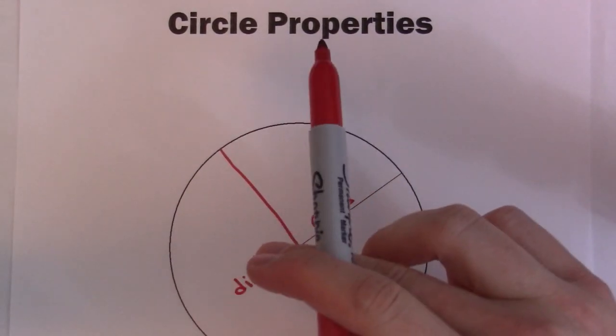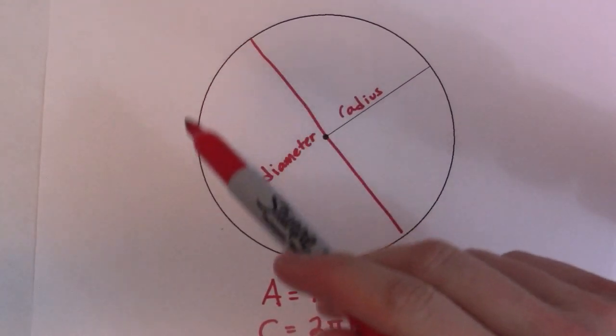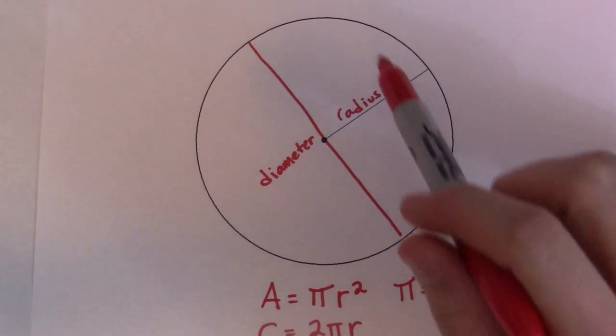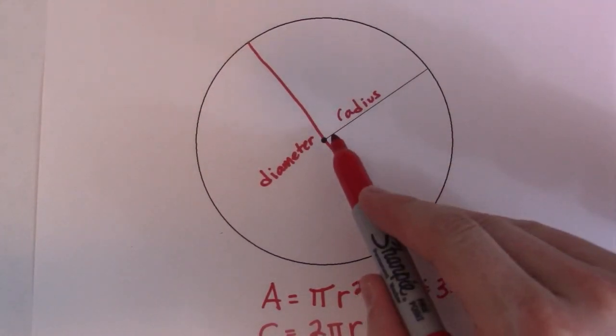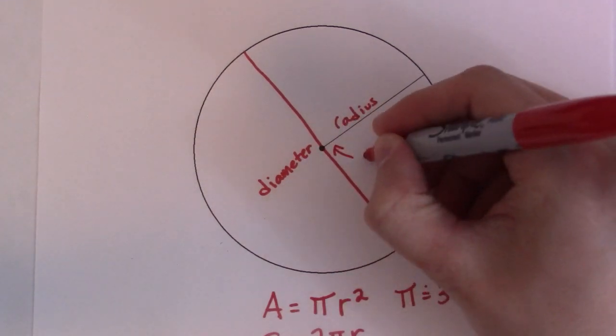So circle properties. This is a circle, and I got it marked up already. A circle is the infinite set of points the exact same distance from a single point - the center. So this guy right here is called the center of the circle.